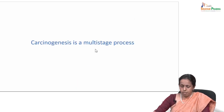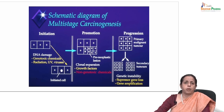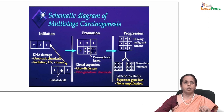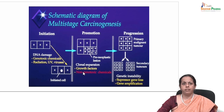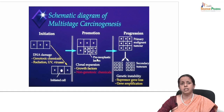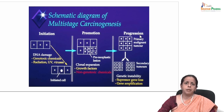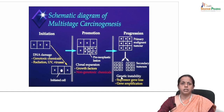What is carcinogenesis? It is a multi-stage process with three steps: initiation, promotion, and progression. In the initiation stage, genotoxic chemicals, radiation, UV, and viruses produce initiated cells, and with initiation there is clonal expansion where all growth factors play a role to increase cell growth. In the promotion stage you have pre-neoplastic lesions with non-genotoxic chemicals in place. Then in progression you have the primary malignant tumor — a malignant tumor forming secondary tumors through genetic instability, suppressor gene loss, and gene amplification.